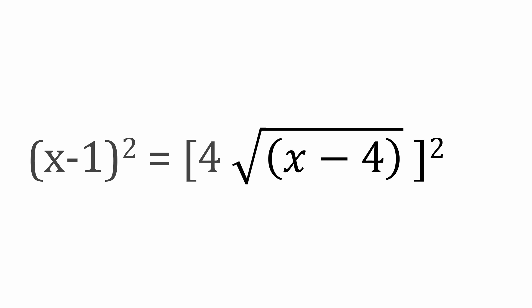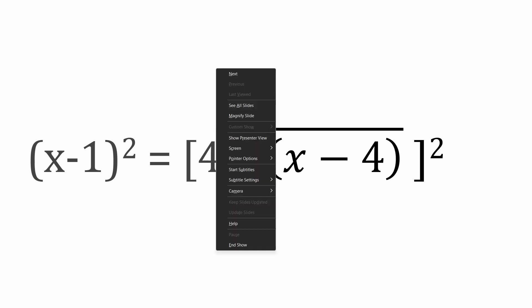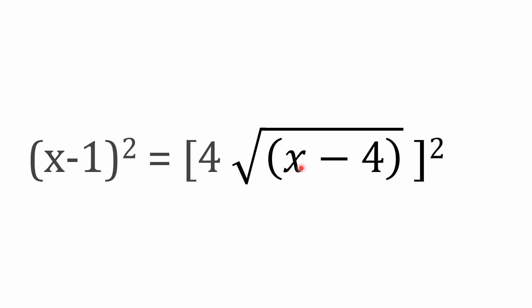Alright, we are going to work on a little algebra problem here. We've got the quantity x minus 1 squared equals, and then we have in brackets, 4 times the square root of x minus 4.